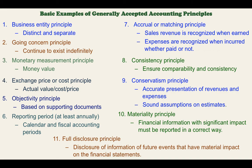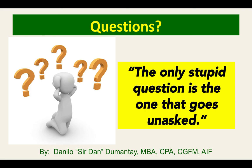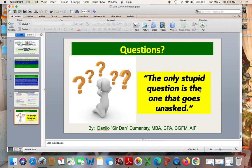Next is the full disclosure principle. In this principle, we have to make sure that we disclose information about future events that have a material impact on the financial statements. For example, if there is a pending case and we are not certain whether that case will provide a favorable result or not to the company, then we have to make a disclosure on that in the financial statements. Those are some examples of generally accepted accounting principles. If you have questions, please let me know — just transmit your questions either in your schoolbook or in MS Teams. Bye for now.